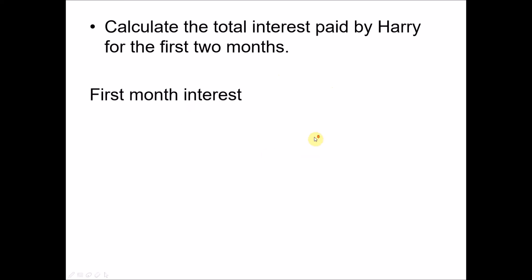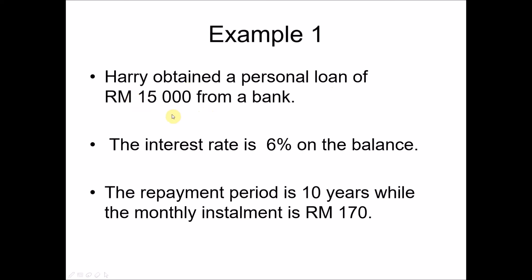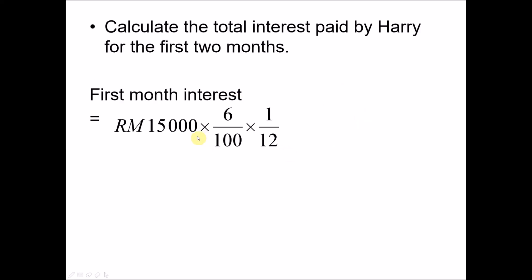For the first month, the interest is calculated on the full loan amount of fifteen thousand. Using I = PRT: fifteen thousand times six percent times one-twelfth — since only one month has passed and T is in years. The interest for the first month is seventy-five ringgit. This seventy-five ringgit is added to the total loan amount.